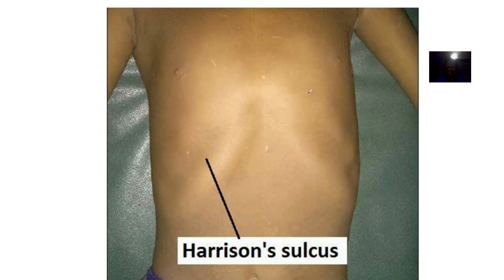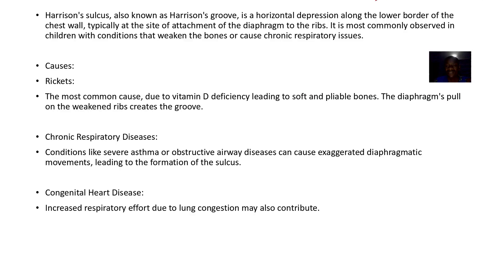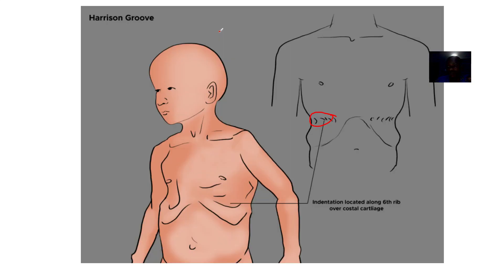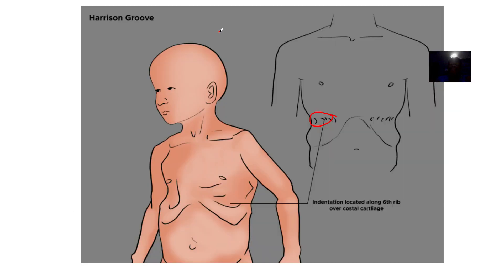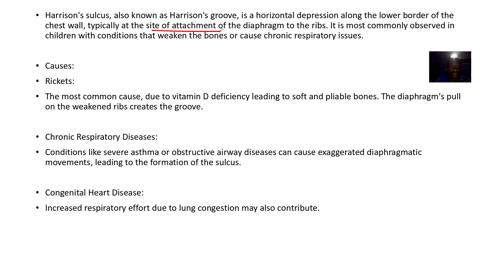It's a horizontal depression along the lower border of the chest wall, typically at the site of attachment of the diaphragm to the ribs. It's most commonly observed in children with conditions that weaken the bones, or conditions that cause chronic respiratory issues - where someone has been struggling to breathe to the level that it shows up like this.